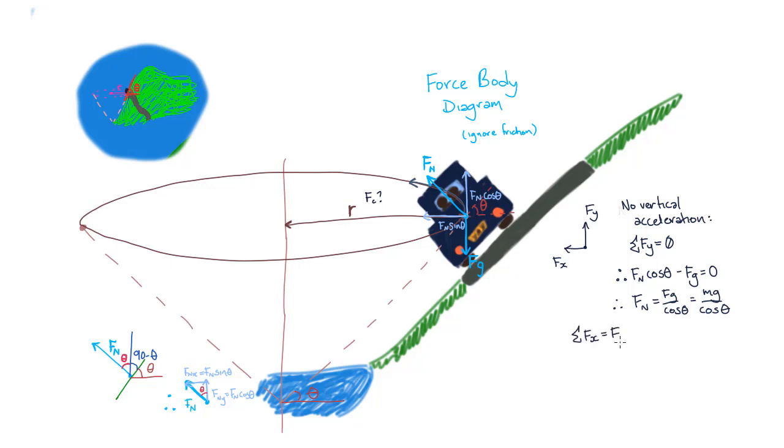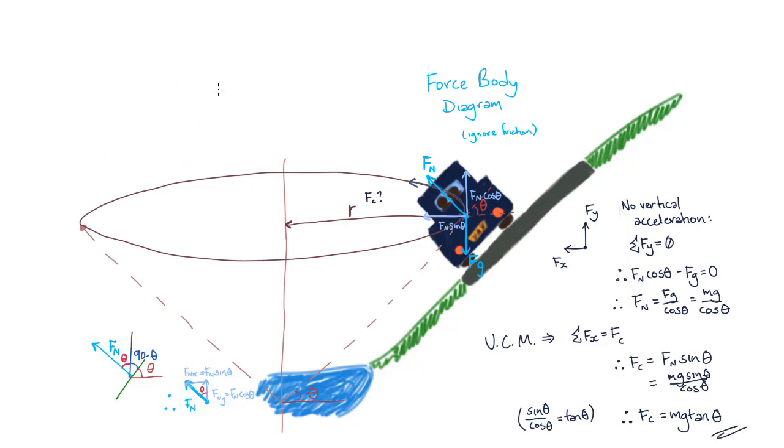Now let's look at the horizontal components. We know, as the car is undergoing uniform circular motion, that the centripetal force is equal to the horizontal component of the normal force. Calculating, we find that the centripetal force is equal to mg sine theta divided by cos theta, which is equal to mg times tan of theta. If we want to find the velocity of the car, we can plug in our uniform circular motion equation, and find that the velocity is equal to the square root of rg tan theta.